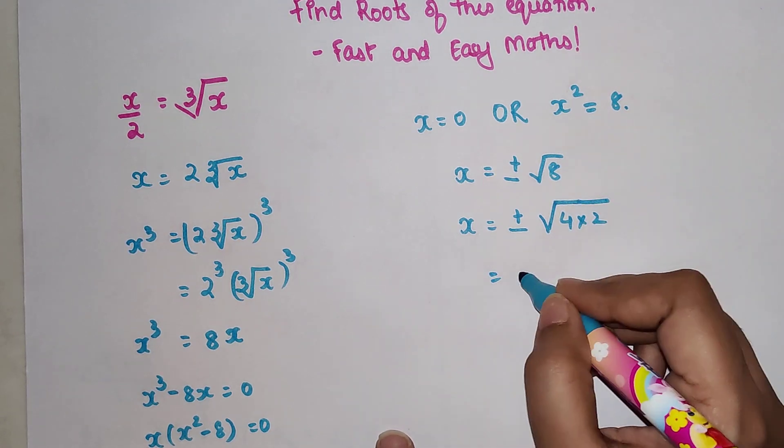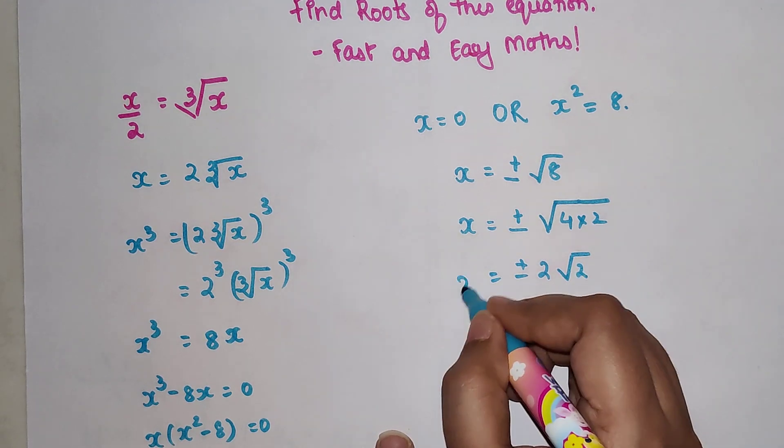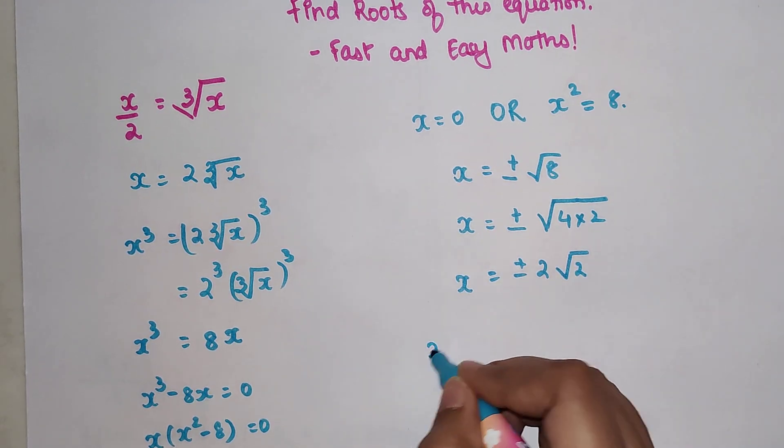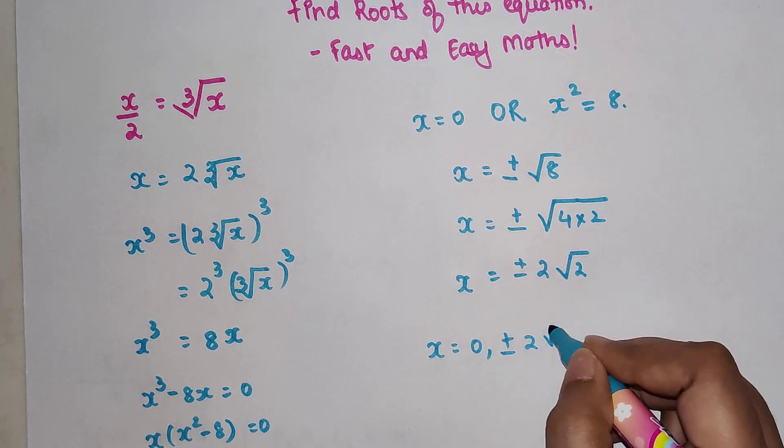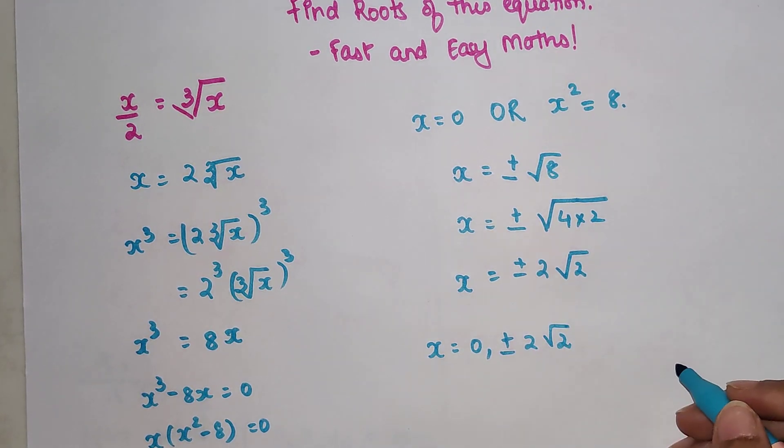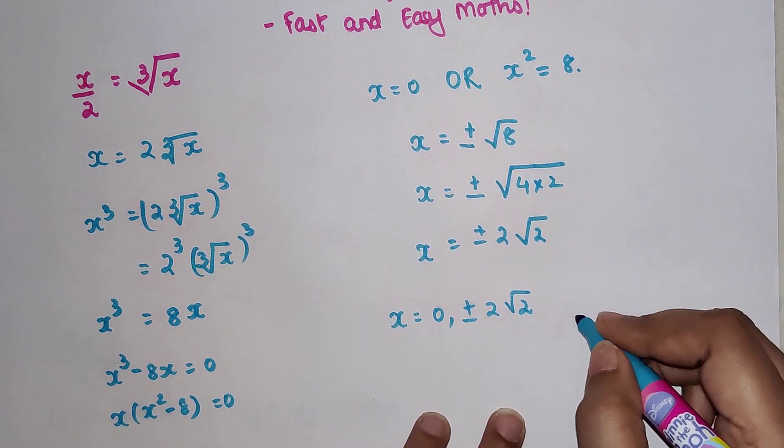So now your final roots are x equals 0, plus minus 2 root 2. These are your final answers.